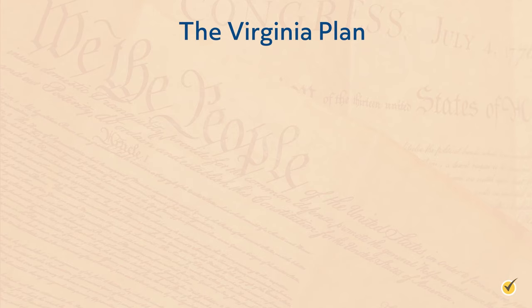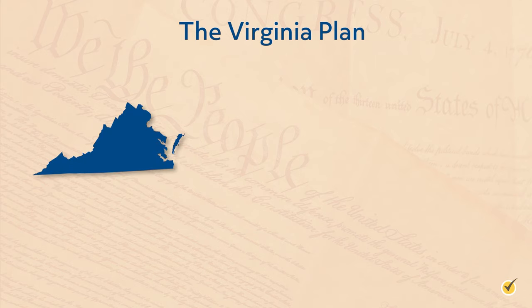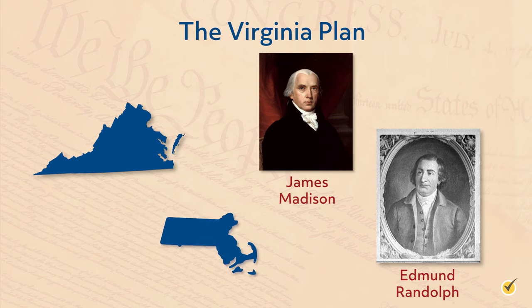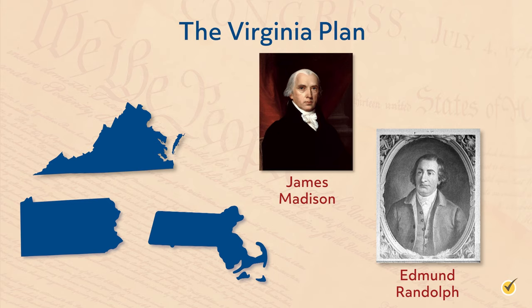What would be known as the Virginia Plan would soon set the tone of the convention. As the name implies, the plan came from the delegates from Virginia, one of the largest states in the Union. The plan was written by James Madison but presented by Edmund Randolph. One of the great sticking points of the Articles for large states like Virginia, Massachusetts, and Pennsylvania was the 9-of-13-states requirement for change. Although about half of the population lived in the three largest states, they were hamstrung by the per-state voting laws, which greatly favored smaller states.